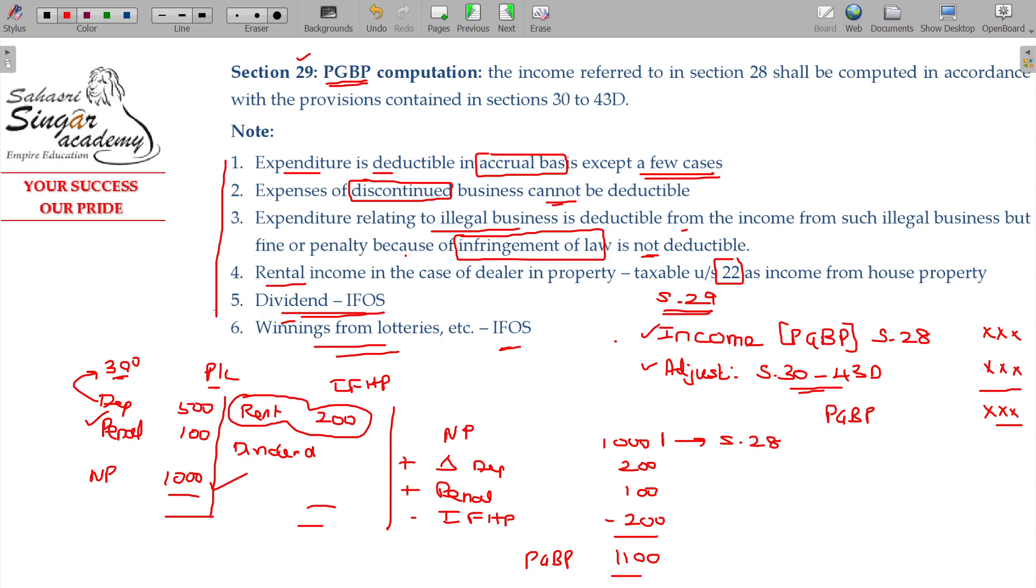First, the understanding of what we call the taxable value. That is the concept. What is the ultimate taxable value? Is that clear? Section 29 deals with PGBP computation.